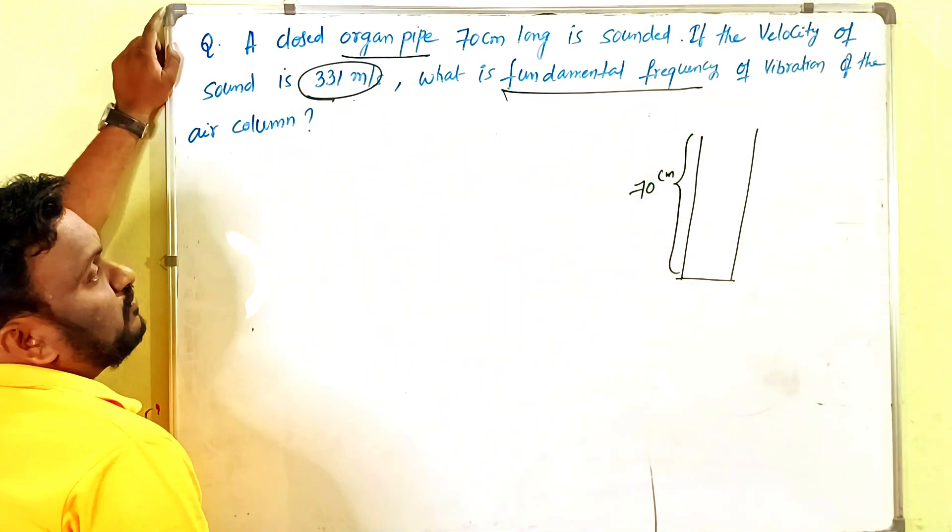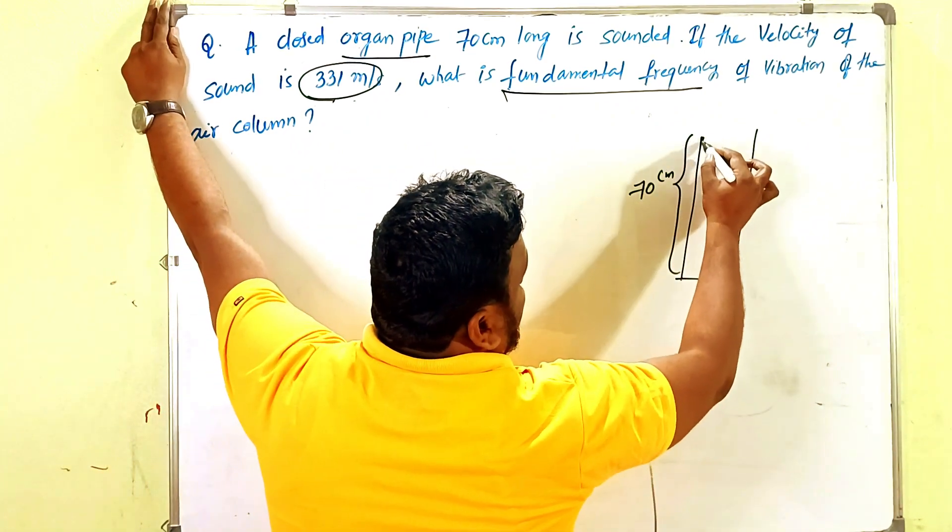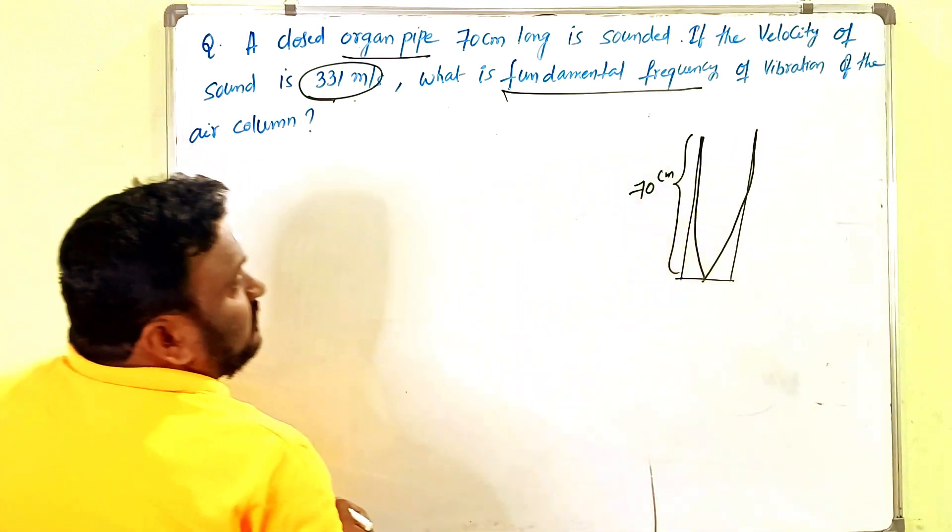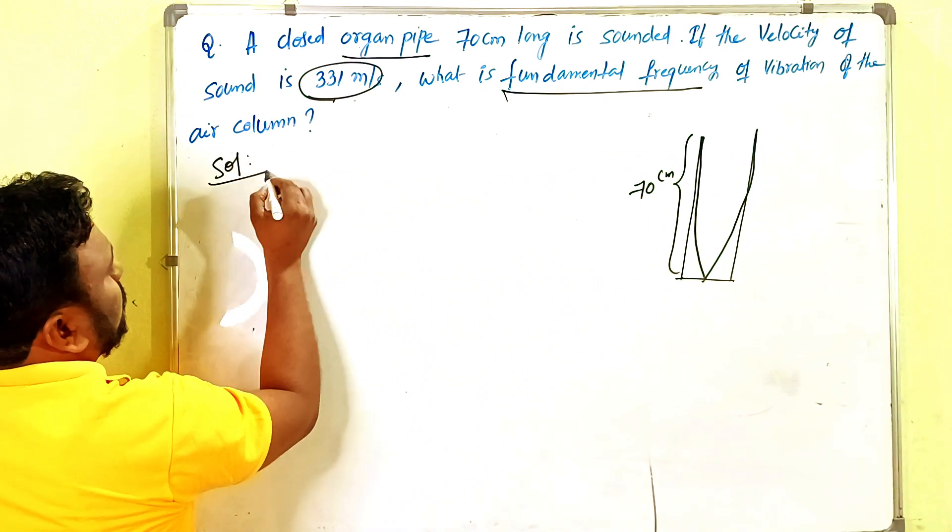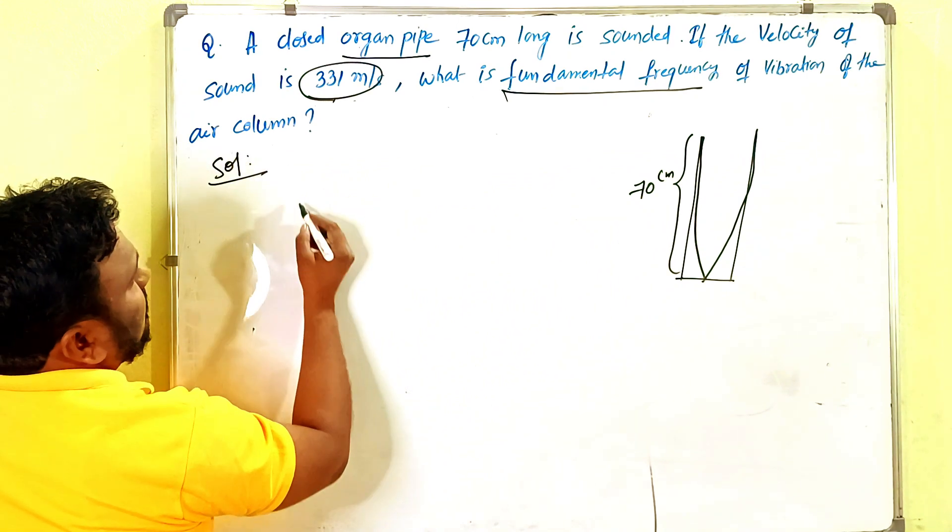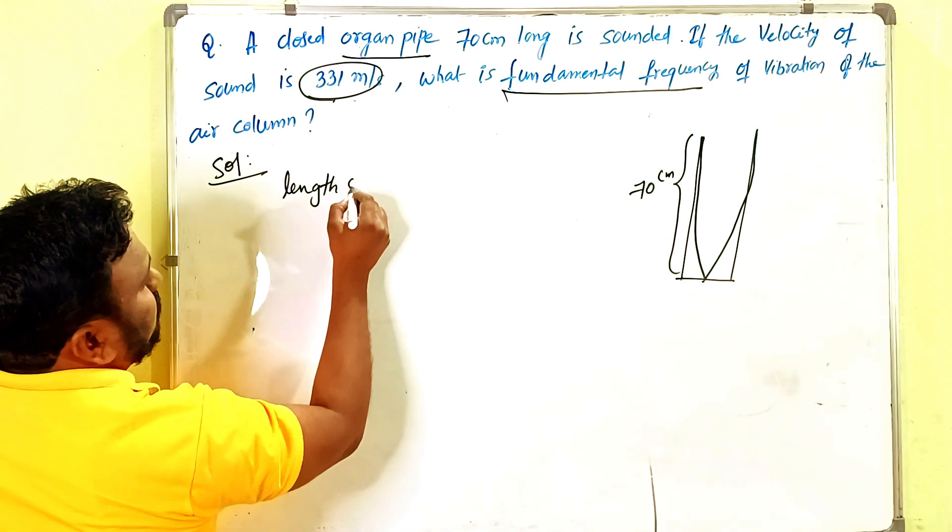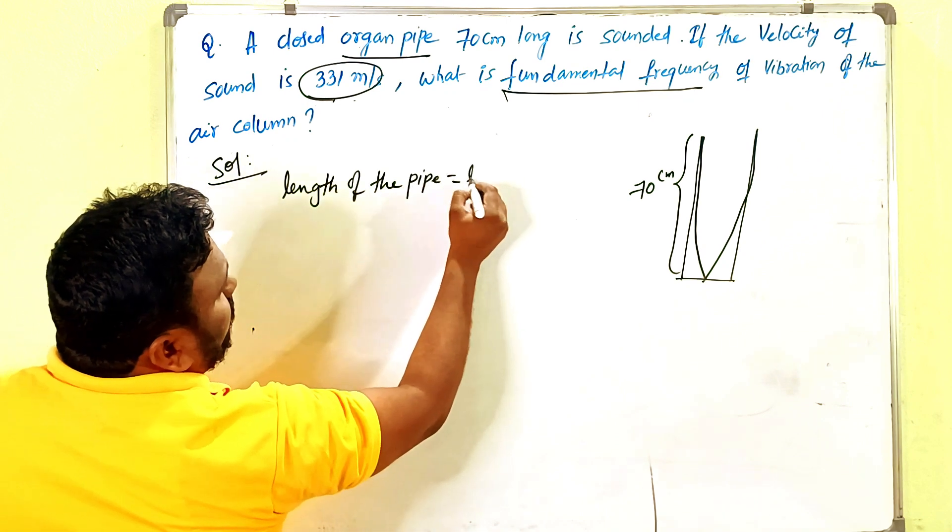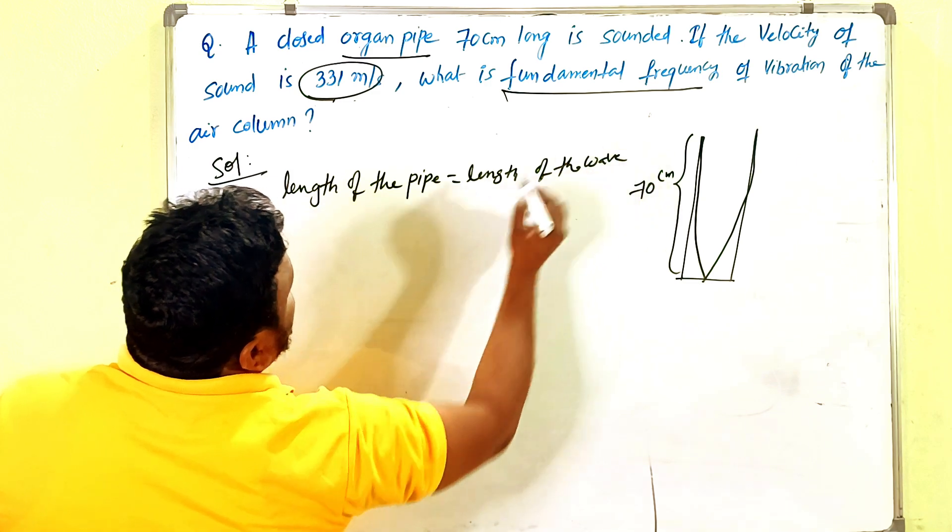What is the fundamental frequency of vibration of the air column? For fundamental frequency, it's very simple. First, read the given values. The first one is length of the pipe. The length of the pipe is 70 centimeters. You can change this into meters.